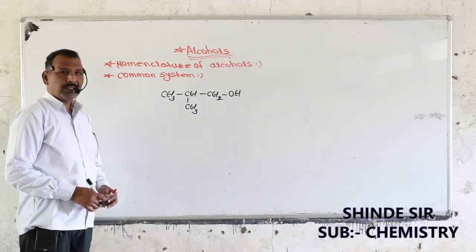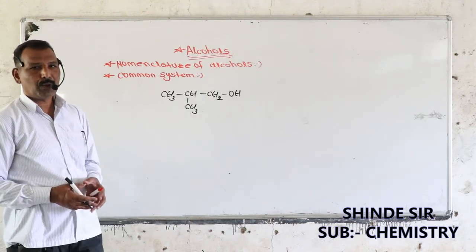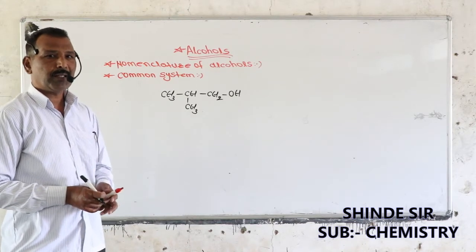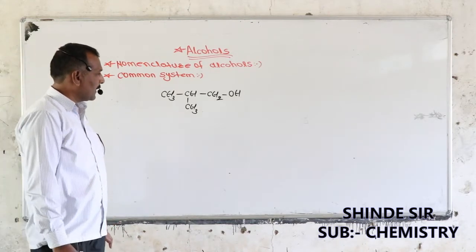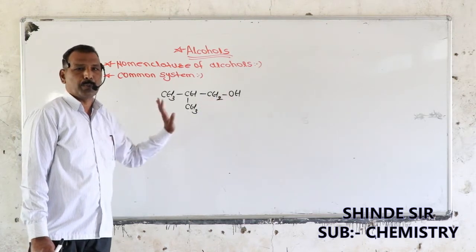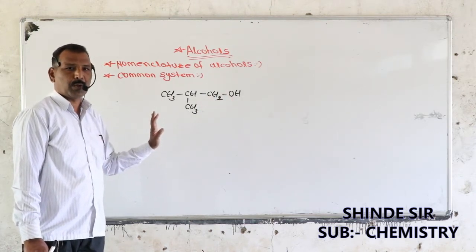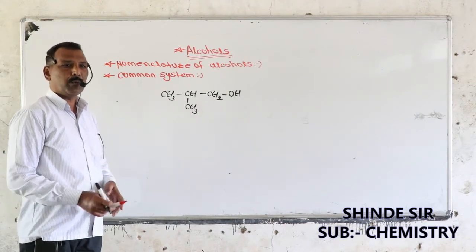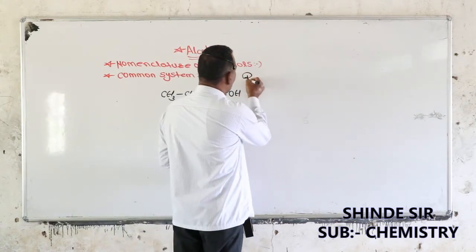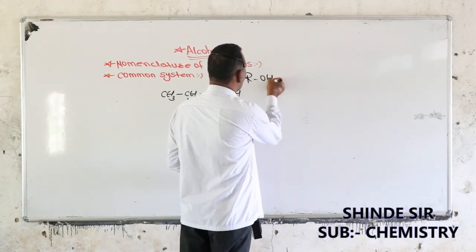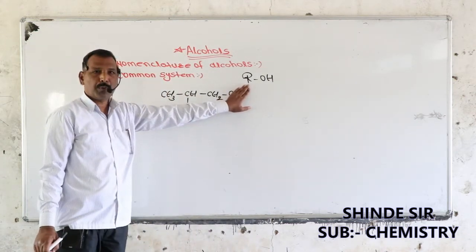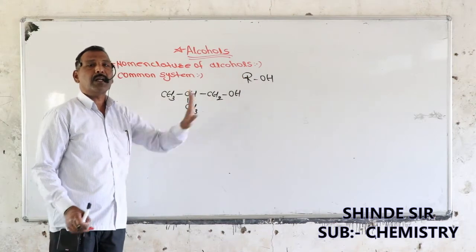While writing the common name of alcohols, the rule given is: you have to write the name of the alkyl group which is attached to the hydroxyl group, and then add the word 'alcohol'. Alcohols are generally represented as R-OH. So first write the name of the alkyl group and then add the word alcohol.